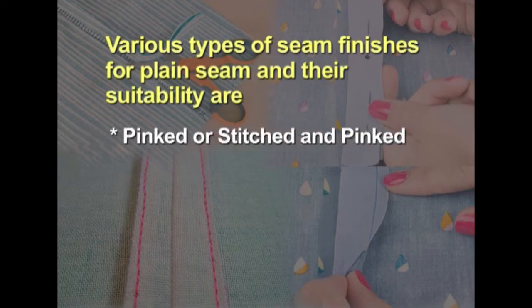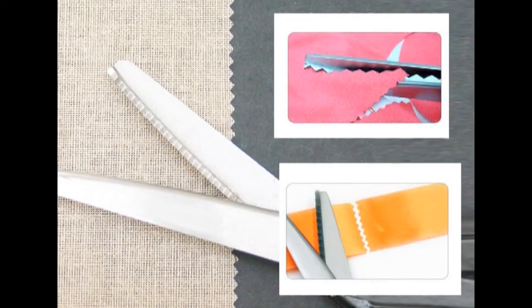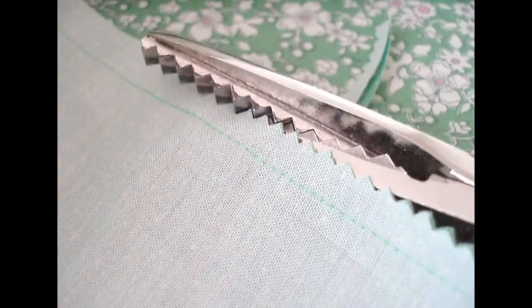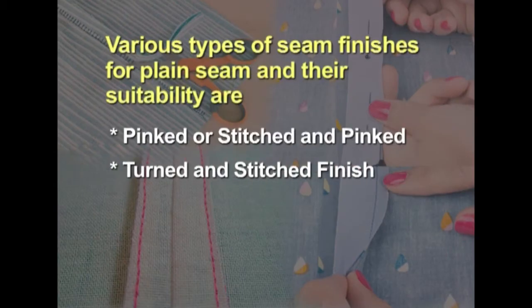The pinked or stitched-and-pinked finish is the quickest method for finishing raw edges and is the least bulky. It is suitable for firm fabrics that do not ravel at all. After stitching a plain seam, trim about one-eighth inch of the seam allowance using pinking shears, or stitch 0.5 cm from each seam edge and trim close to the stitch line with pinking shears, then press open or to one side. The turned-and-stitched finish is an easy method for finishing light and medium weight fabrics — turn 0.3 cm from the raw edges and stitch close to the fold.